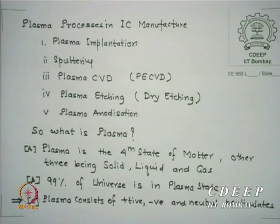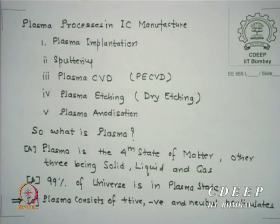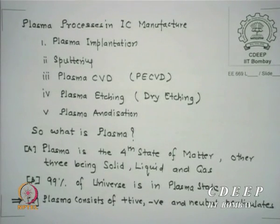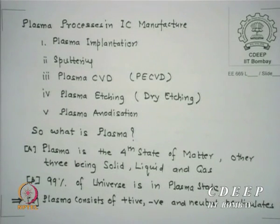The problem with plasma is similar — if particles hit with too much energy, they may create damage. But most plasma damage can be annealed in the plasma itself. That is the interesting part — plasma itself can anneal much of the damage it causes.